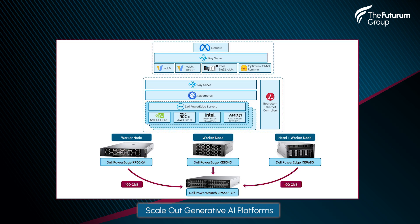This distributed training is happening on premises in the reference implementation. We have a lab right down the road in Round Rock. We deployed an XE 9680 server with NVIDIA H100s — our current generation GPU — and a PowerEdge XE 8545, our last-gen server with NVIDIA A100s. For good measure, we added a PowerEdge R760 XA, which allows PCIe GPUs. The two prior servers use SXM form-factor GPUs, which are higher-power and more performant than PCIe cards. We clustered all of these together with a Dell PowerSwitch over 100-gigabit Ethernet.